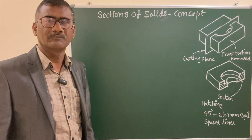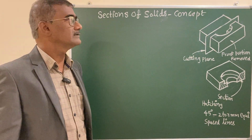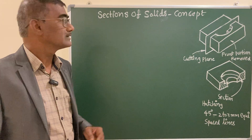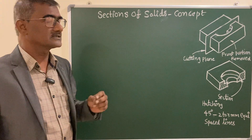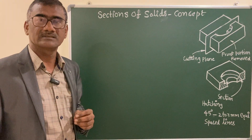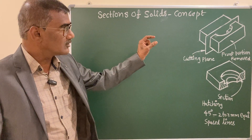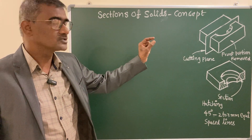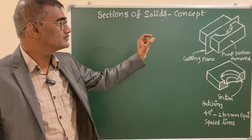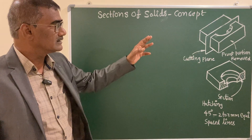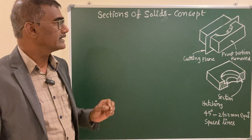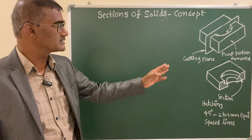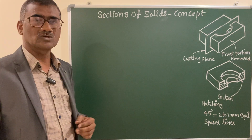Hello everyone, welcome to Ravi's Academy. In today's class, we will be learning the concept of sections of solids by means of an object. I have shown that object - you can see that the isometric view of the object is given, and you will be learning how to draw the sections of solids by means of this particular solid.